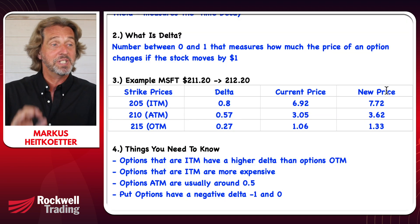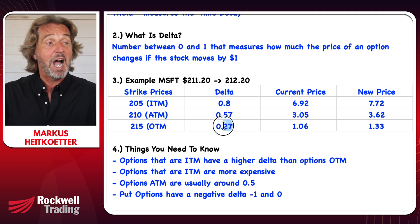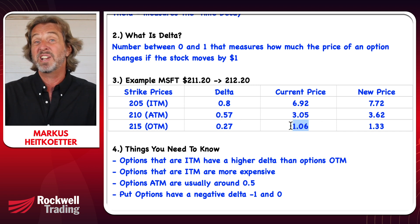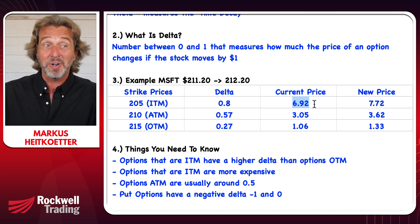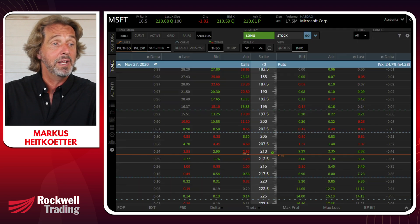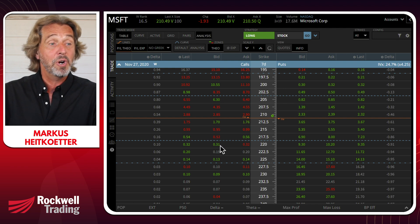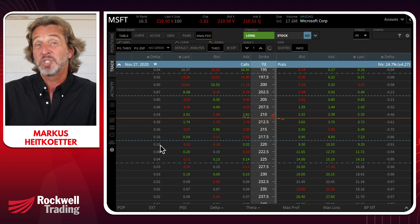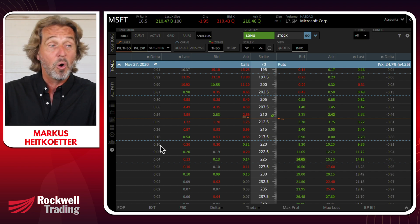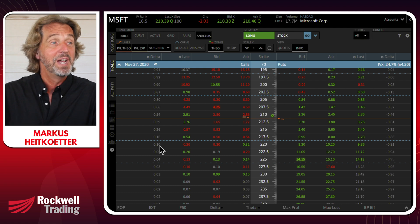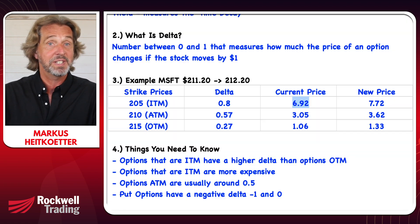This is important because some people think they should buy out-of-the-money options because they are cheap — it's much cheaper to pay $1.06 than $6.92. But as you can see, out-of-the-money options don't really move a whole lot. The further out of the money you buy, the less it moves. If you buy a really cheap option for only $0.31, the delta might be only 0.10 — so for every dollar the stock moves, this option only moves $0.10.